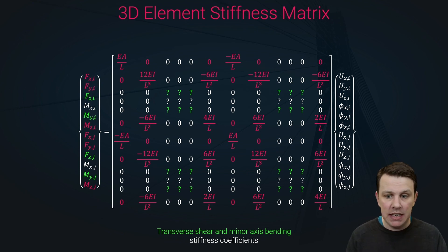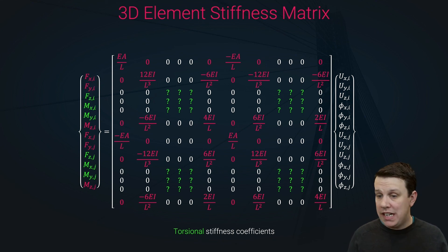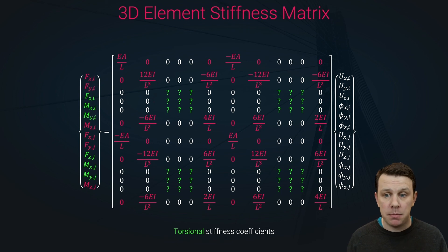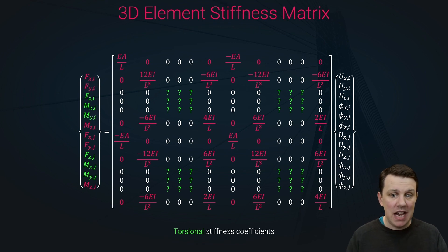That still leaves question marks for the remaining stiffness coefficients. We need to fill in the transverse shear and minor axis bending stiffness coefficients, highlighted in green, and then layer on the torsional stiffness coefficients. In the next lecture we'll derive the stiffness coefficients for transverse force and moment about the y-axis, and in the lecture after that we'll add the torsional stiffness coefficients. This is relatively straightforward since the process is essentially the same as for major axis bending — most of the work is already done.